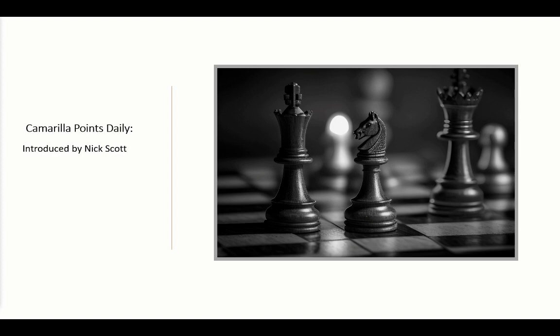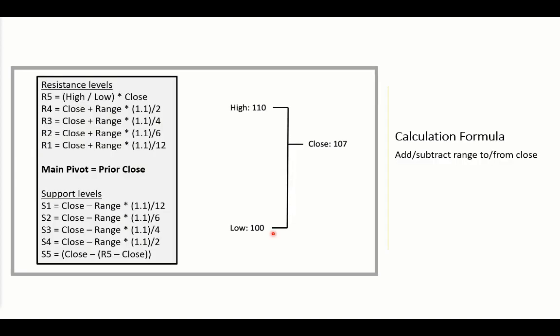There is also another likely candidate for being the king or ruler of the Camarilla levels — namely the last session's close. Why? Because in a nutshell, Camarilla levels are all based on the last session's range and the position of the close. The range is simply the difference between the high and the low — so here we have a range of 10.